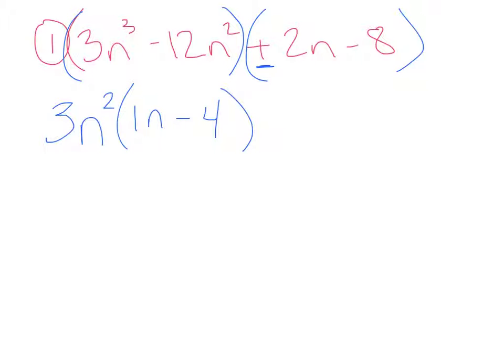Then you look at the second set of parentheses. What goes into 2n and -8? Remember that first thing is positive, so we're going to take out a positive 2. If it was negative, we would take out a negative. And if we divide by 2, we get n - 4. Now you should see something that these two, n - 4 and n - 4, those are the same thing.